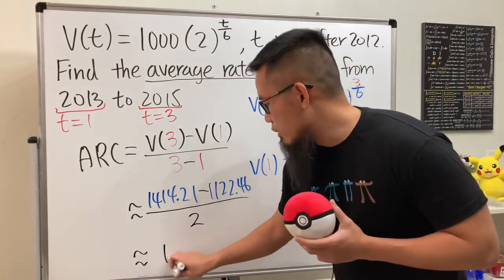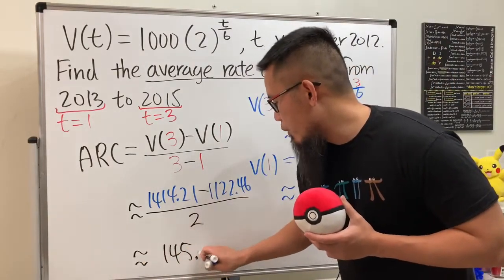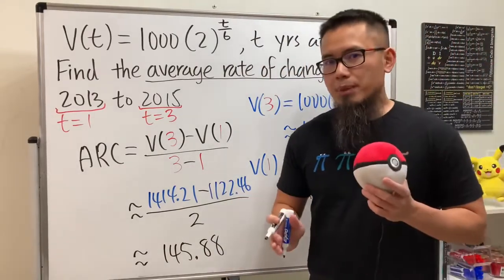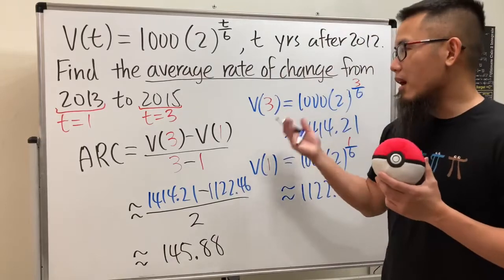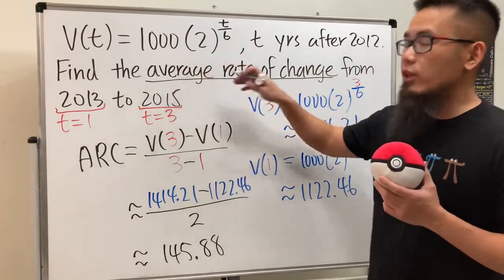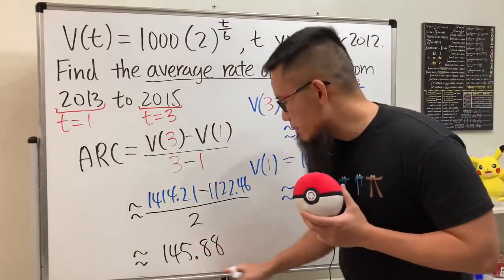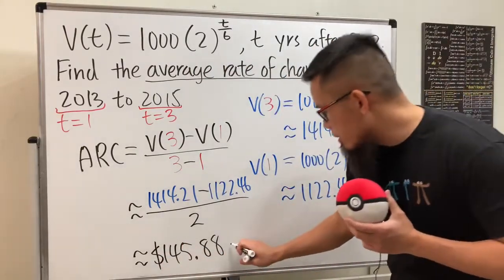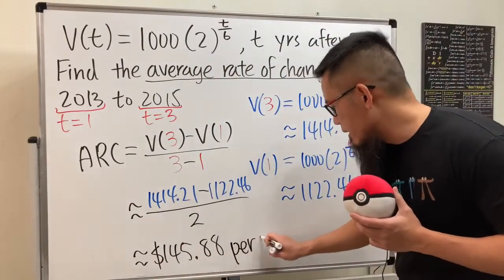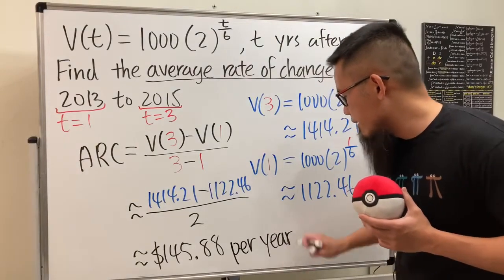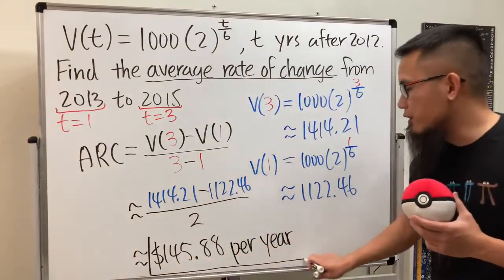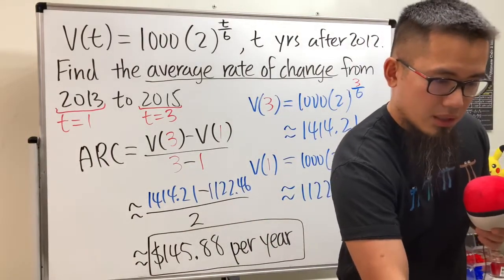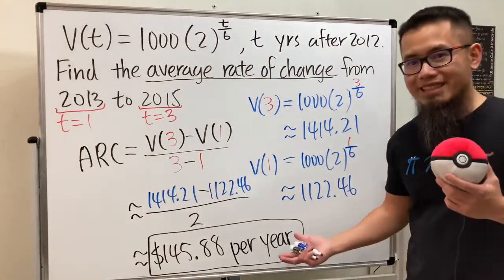145.88. However, don't forget about the unit. This right here is dollars, and then this is the average rate of change, so we are talking about this as the dollar amount per year. Right, so $145.88 per year, that will be the answer.